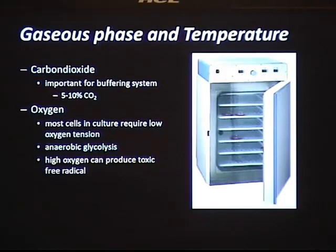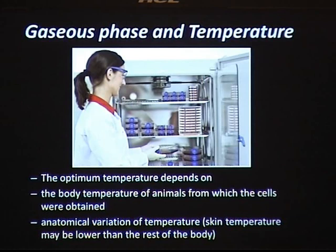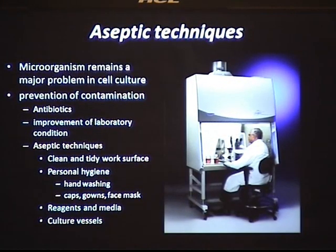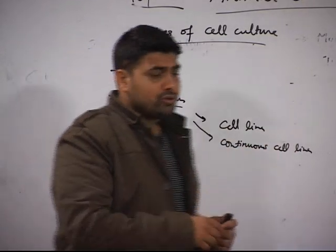Moving to the gaseous phase: specific incubators are important. These incubators are fitted with a carbon dioxide supply, have a fixed temperature, and provide an arrangement for carbon dioxide supply. Cells are placed inside and kept there to allow them to proliferate. Aseptic conditions are maintained using a laminar air flow or biosafety cabinet in which a person sits and does their work. The cabinet provides aseptic conditions for persons to work inside, and cultures can be dealt with without any contamination.